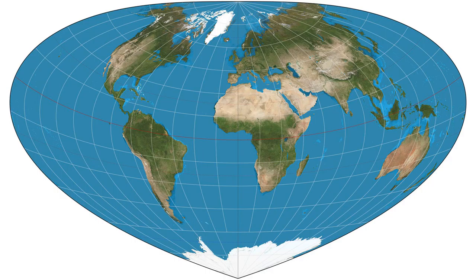ϊ (i-umlaut) is the latitude, î>> (i-circumflex right double angle bracket) is the longitude from the central meridian, and ϊ₁ is the given parallel of the projection which determines its shape, all in radians.